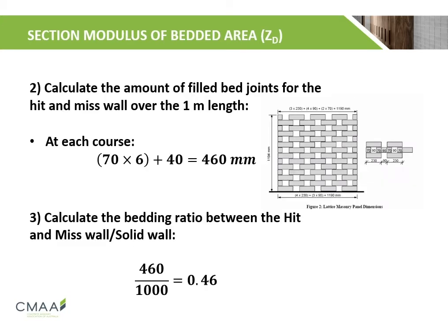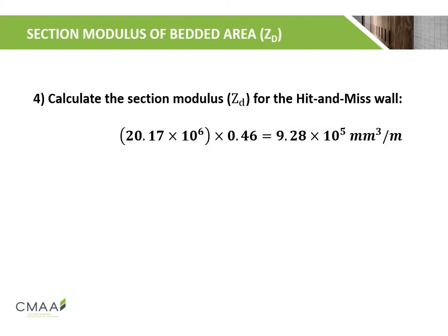Next, we calculate the amount of filled bed joints for the hit-and-miss wall over 1 m length. This is calculated to be 460 mm at each course. The bedding ratio between the hit-and-miss wall and the solid wall is then calculated to be 0.46. The section modulus for the hit-and-miss wall is then calculated by multiplying the section modulus of the bedded area for the solid wall by the bedding ratio, giving 9.28 × 10⁵ mm³ per metre run.